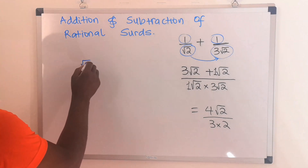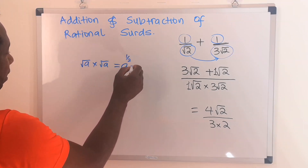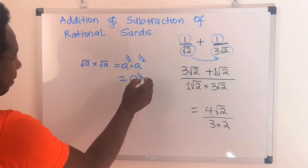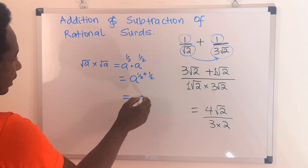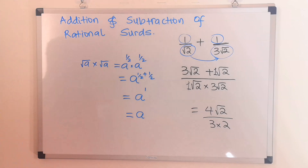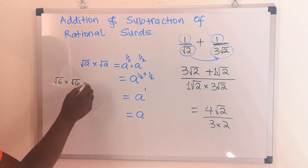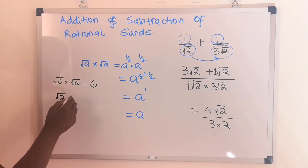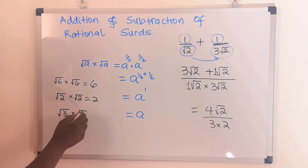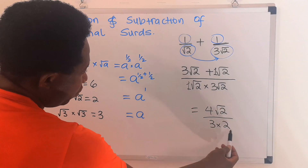1 multiplied by 3 is 3; times root 2 times root 2 is 2. Remember that the square root of A multiplied by the square root of A is the same as A to the power of half times A to the power of half. Applying the law of indices, you get A to the power of 1/2 plus 1/2, which is A to the power of 1, which returns itself. Because of this rule, the square root of 2 times the square root of 2 gives you 2.